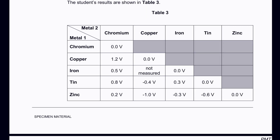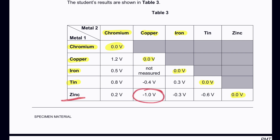When both electrodes contain the same metal — for example both are chromium — we get zero voltage. If metal one is less reactive, like copper compared to chromium, we see a positive voltage. But copper is less reactive than zinc as metal one, so zinc gives a negative voltage.